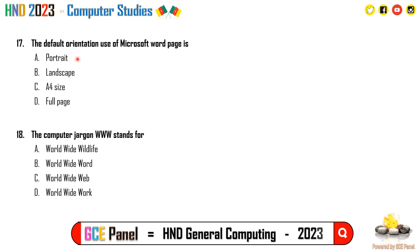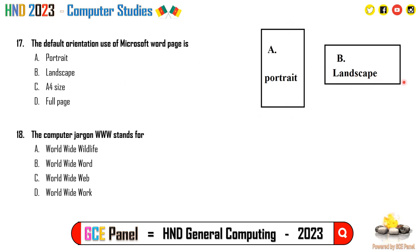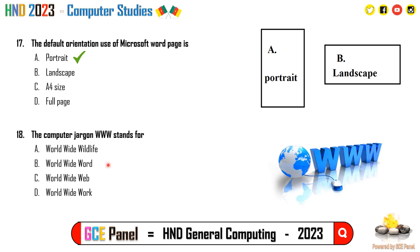Question 17: The default orientation for a Microsoft Word page is portrait. The page can either be portrait (vertical) or landscape (horizontal). The default in Microsoft Word is always portrait. Question 18: WWW stands for World Wide Web — not World Wide Wildlife or World Wide Work.